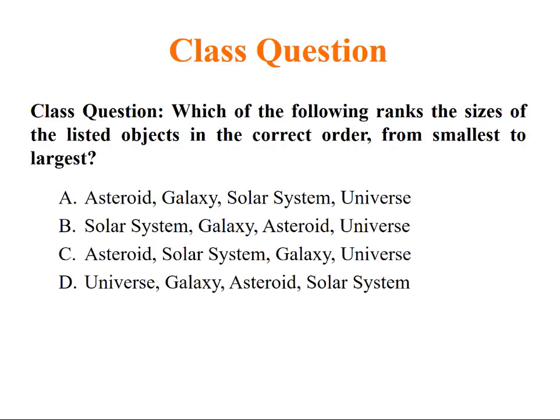So let us repeat the class question which we discussed in lecture number 1. Which of the following ranks the size of listed objects in the correct order from smallest to largest? You can look through the choices and the right answer is C: Asteroid, Solar System, Galaxy, Universe. Universe is the largest of all four.